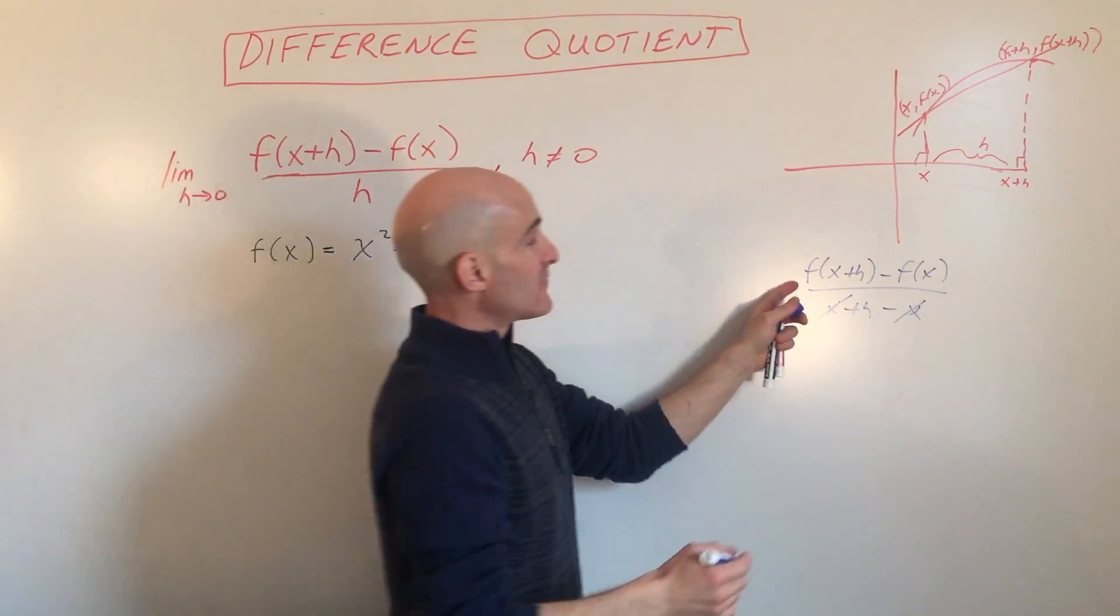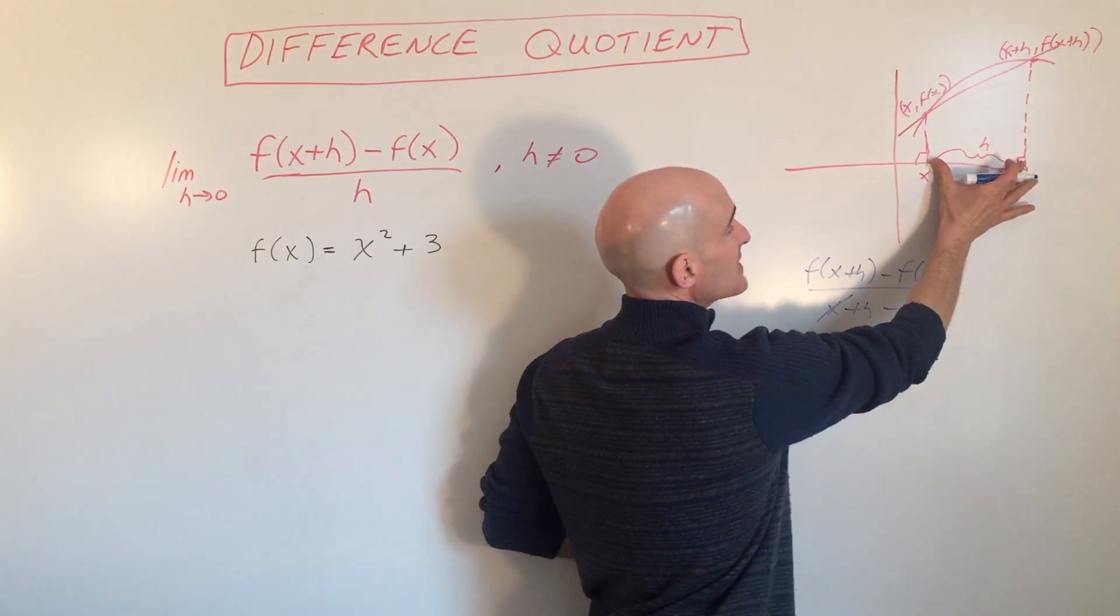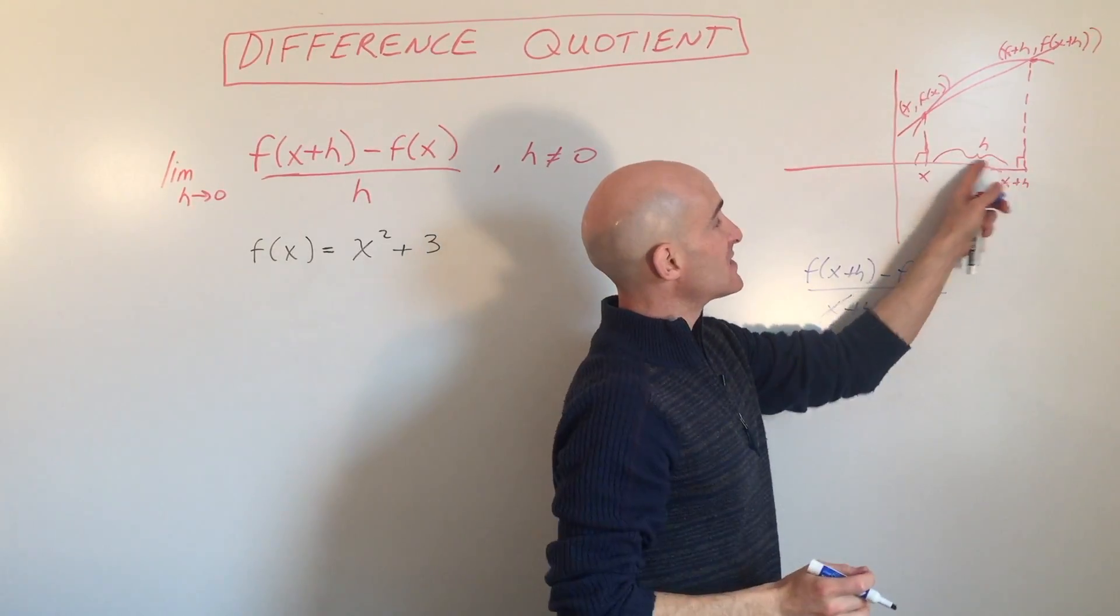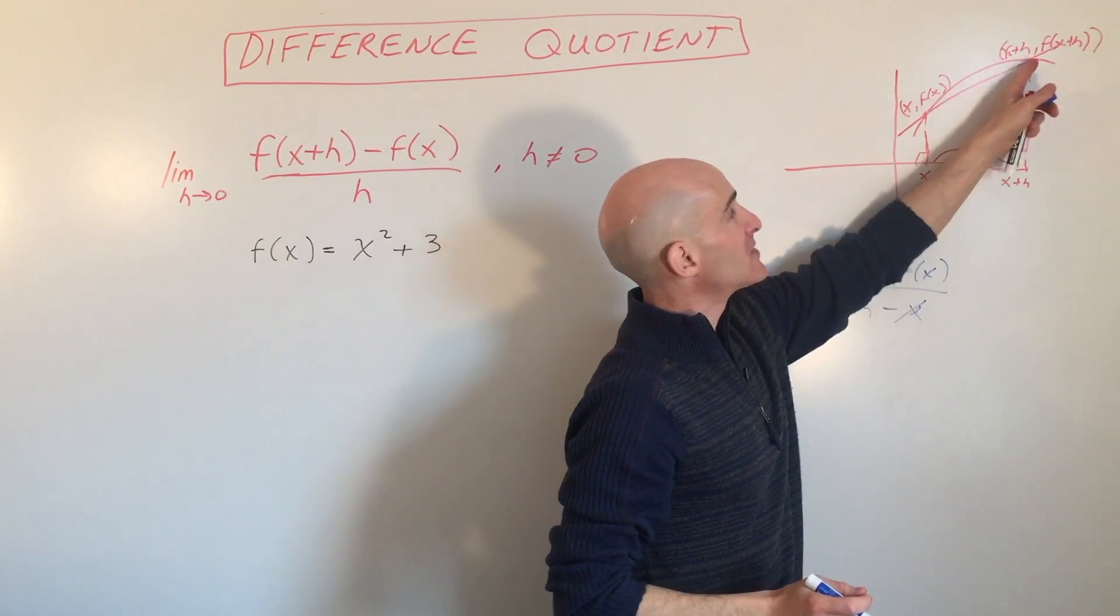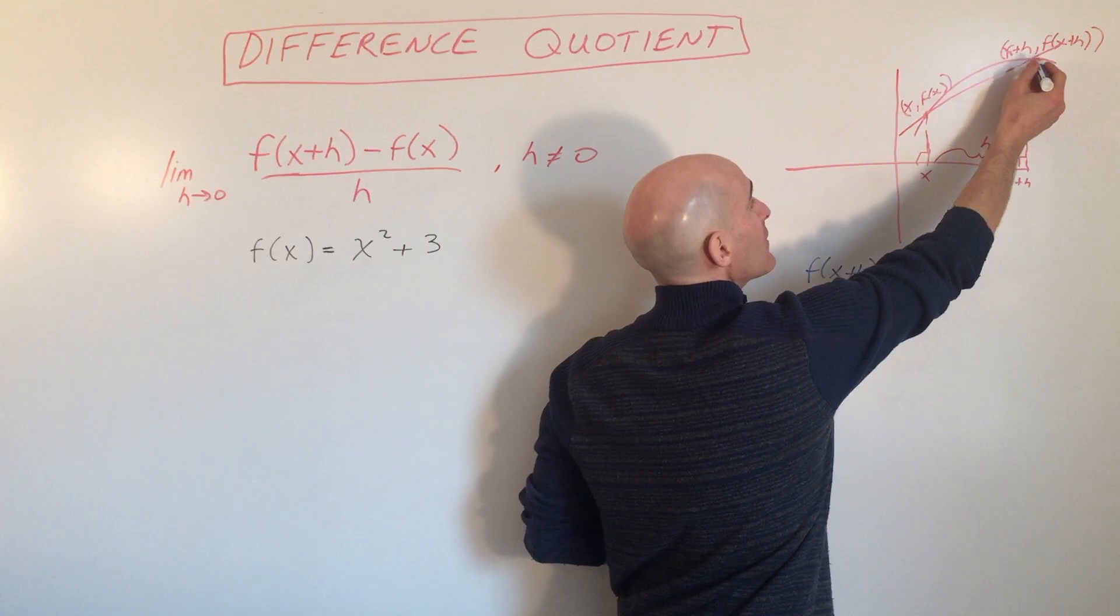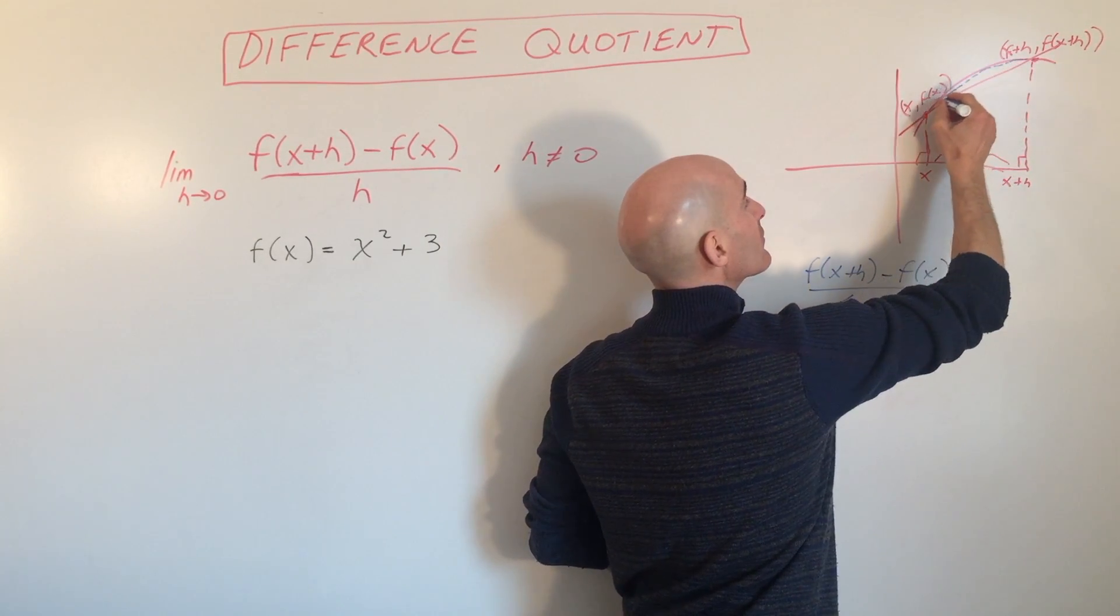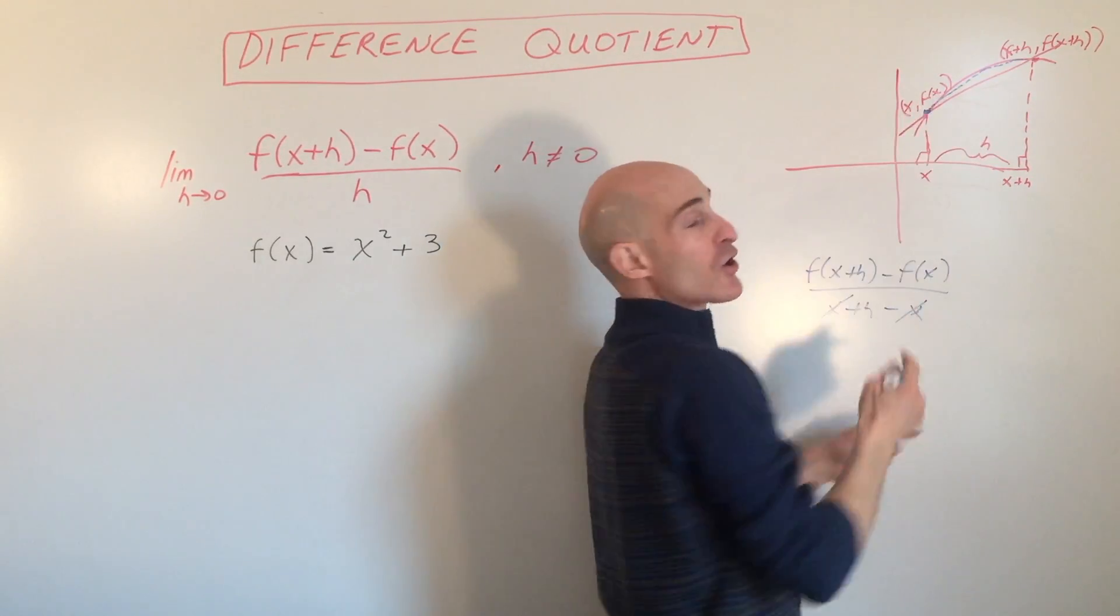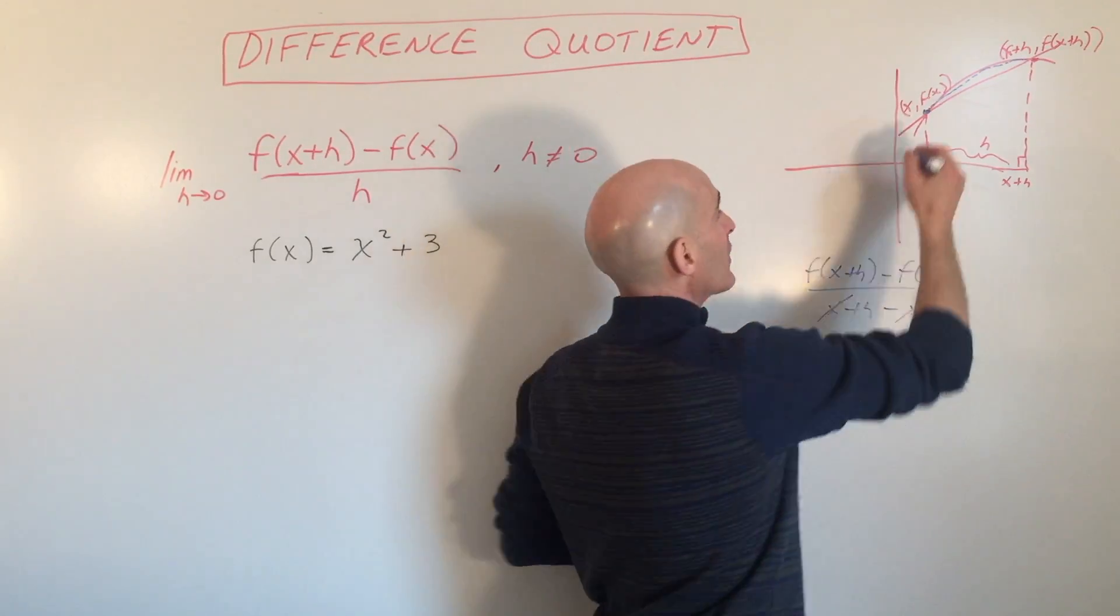And then what happens is if you take the limit as h approaches zero, meaning as this distance between the points gets smaller and smaller, this point moves along the curve until the points coincide with one another.